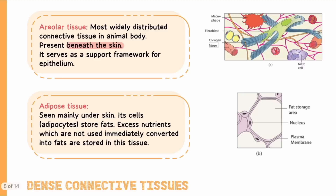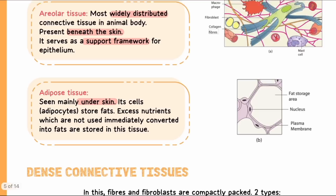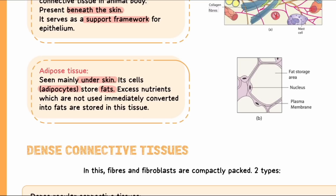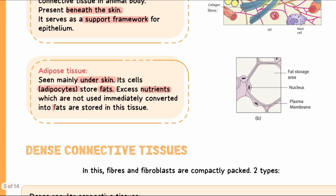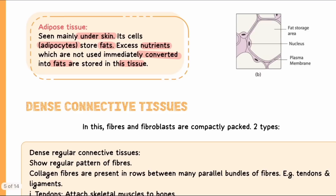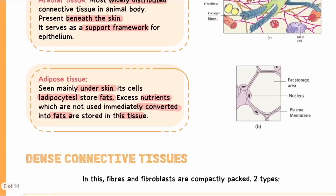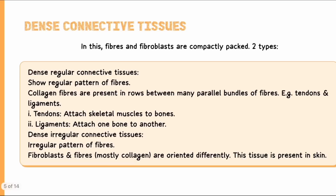There are two types of loose connective tissue: areolar connective tissue and adipose connective tissue. Areolar connective tissue is widely distributed and majorly forms the support framework for epithelium — connective tissue is present below epithelial tissue, with a basement membrane between them. Adipose tissue is also found under the skin, but it supports epithelium less; instead it has adipocyte cells that store fat. Excess nutrients are converted into fat and stored in this tissue.